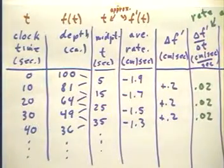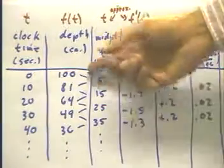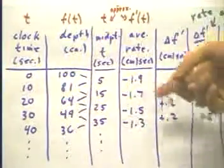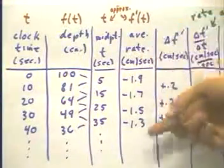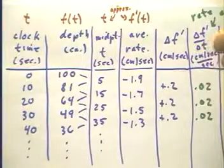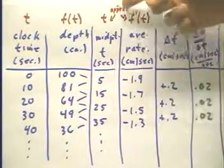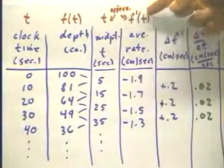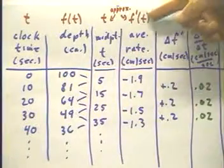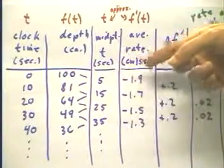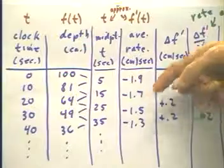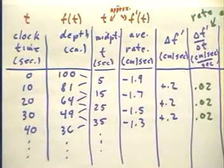And this is a basic property of a quadratic function. If this is perfectly quadratic data on uniform time intervals, then the average rate will always change by the same amount. Now what we've got here are approximate values of the clock time t and the rate of change or derivative function f prime of t. So clock time 5, the derivative should be approximately negative 1.9. At 15, it should be negative 1.7, and so forth.